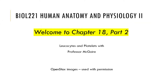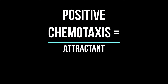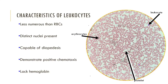Today we're going to focus on leukocytes and platelets. Leukocytes are less numerous than red blood cells. They possess distinct nuclei and can therefore perform metabolism. They can leave the circulation, and once outside the bloodstream, white blood cells are attracted to potential infections and possible injuries. We call this process positive chemotaxis, meaning they move toward a chemical stimuli. White blood cells also lack hemoglobin pigment.